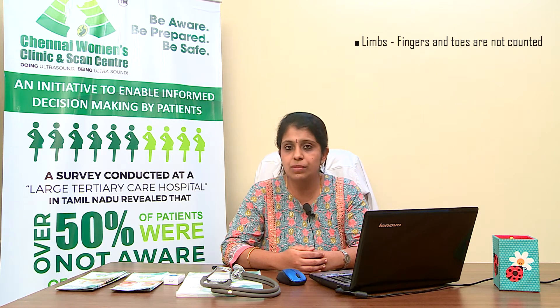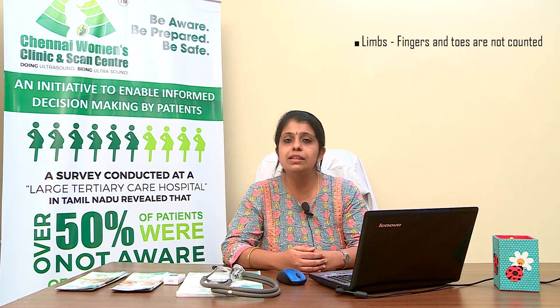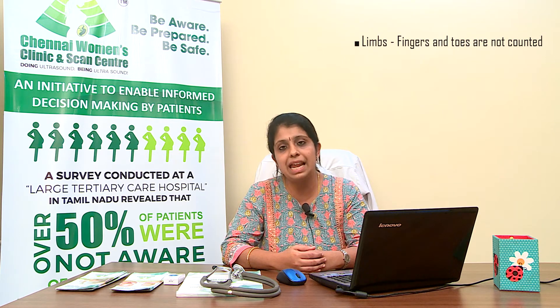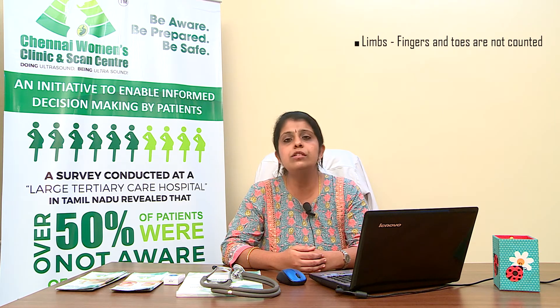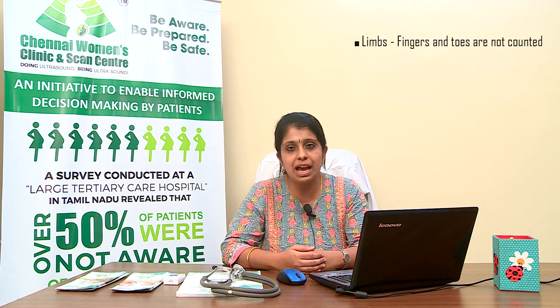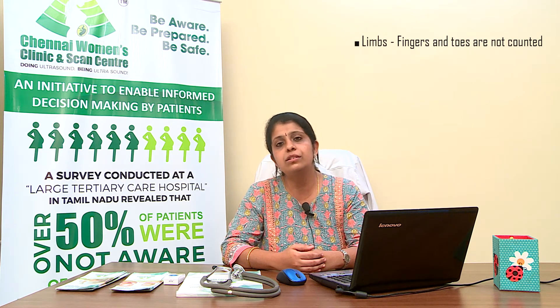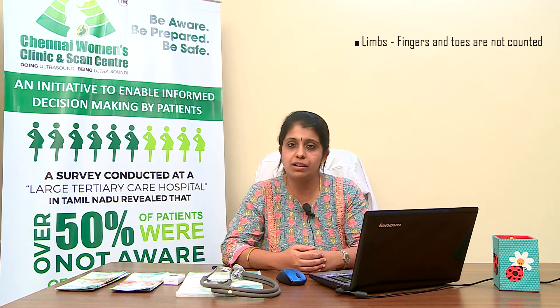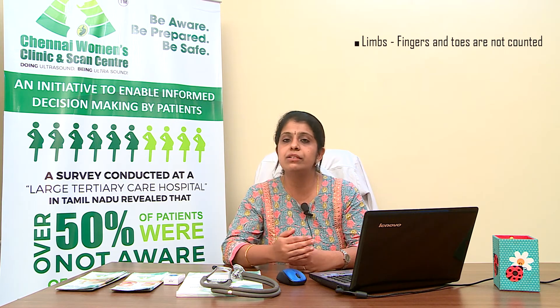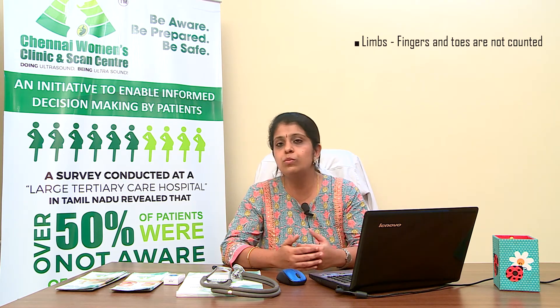Then we come down to the limbs. We check whether all three segments of the upper limbs — the hands — and all three segments of the lower limbs — the legs — are present or not. We also look for opening and closing of the hands and toes, but we do not count the number of fingers or toes unless we identify any other abnormality. So as a routine, we do not count the fingers and toes.